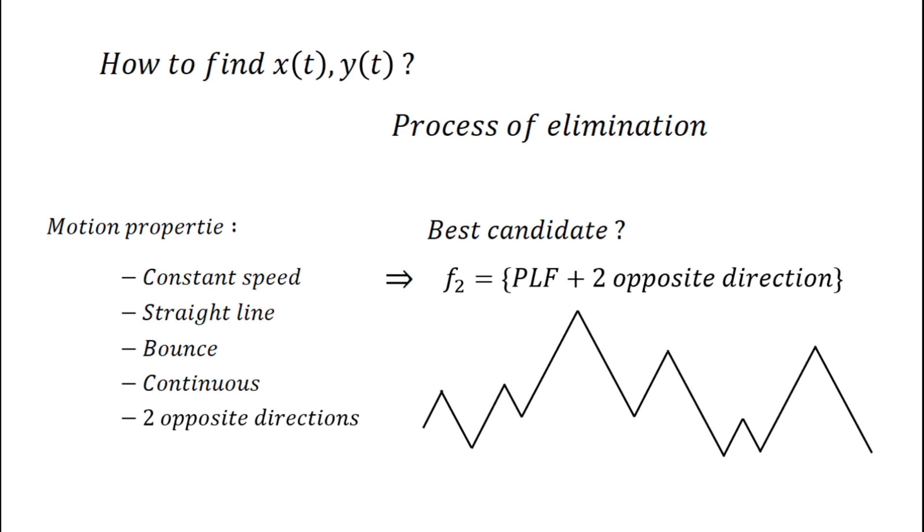Since the particle cannot go through the boundary, we can also say that it is bounded. Let's say it is a unit square, so it is bounded in every direction between 0 and 1. This will give us F3.